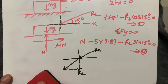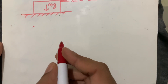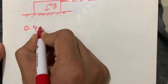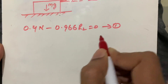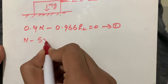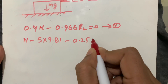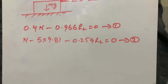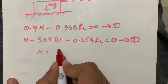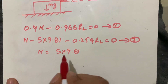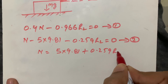Writing the equations separately: equation one is 0.4N - 0.966 R2 = 0. Equation two is N - 5 × 9.81 - 0.259 R2 = 0. From equation two: N = 5 × 9.81 + 0.259 R2. This is equation three.